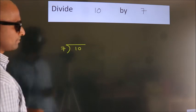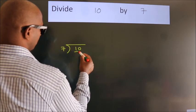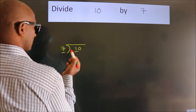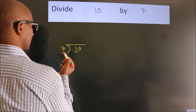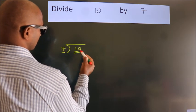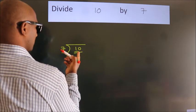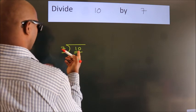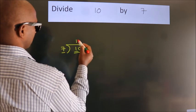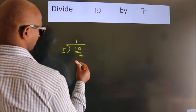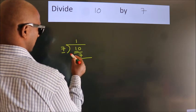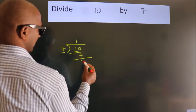Next. Here we have 1, here 7. 1 is smaller than 7, so we should take 2 numbers: 10. A number close to 10 in the 7 table is 7 once, which is 7. Now we should subtract. We get 3.